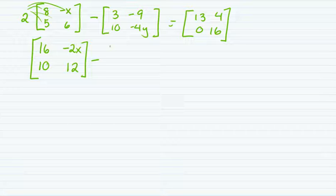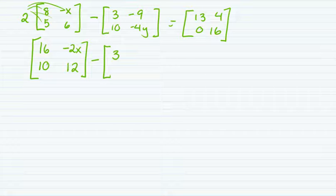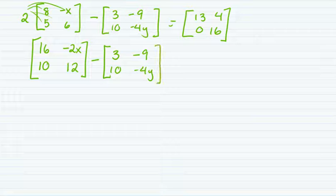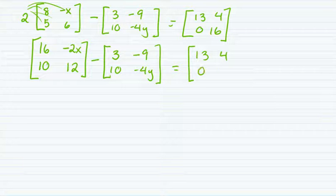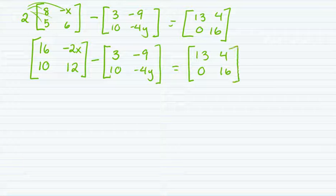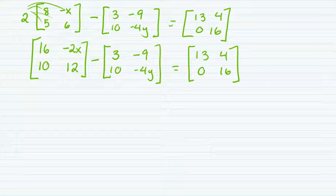And then from there, I have subtraction. I can subtract these matrices because they are the exact same dimension. I can only add and subtract if they're the exact same dimension. Multiplication has a little bit different requirement for the dimensions if we need to multiply.